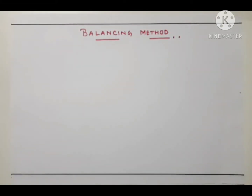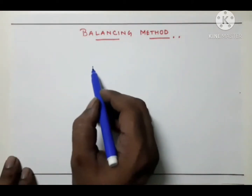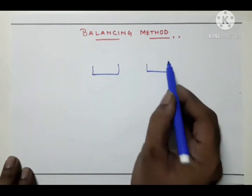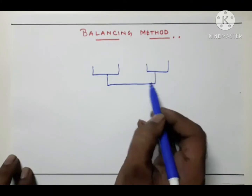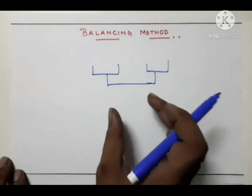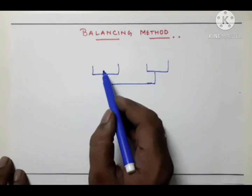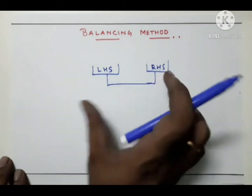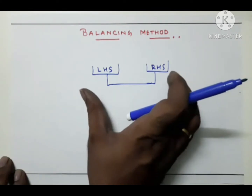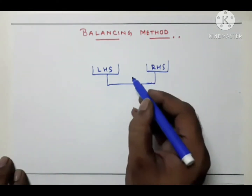To understand the balancing method clearly, let's use a beam balance as an example. A beam balance is balanced when the left hand side and right hand side both have the same weight. If both sides have the same weight, it remains balanced.